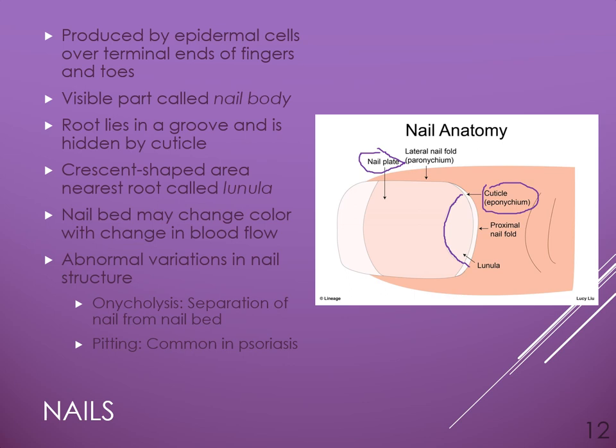We look at nail beds to assess perfusion. The nail bed is highly vascularized, so if it's really pink, that means we're getting good perfusion to the extremities. However, if they're dusky, grayish, or blue, that could mean there isn't good perfusion and the fingertips aren't getting the oxygen they need. Changes in nails can also be a sign of underlying conditions — including congenital syndromes, tumors, or peripheral vascular disease. Sometimes the nail separates from the nail bed, which is called onycholysis, and typically the nail will grow out and look normal.